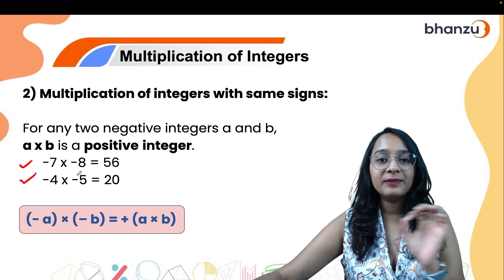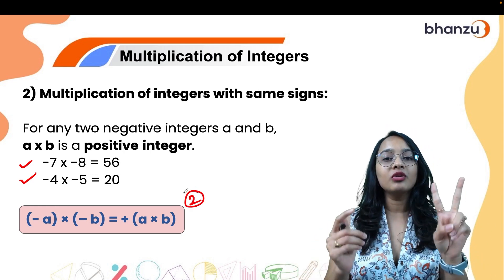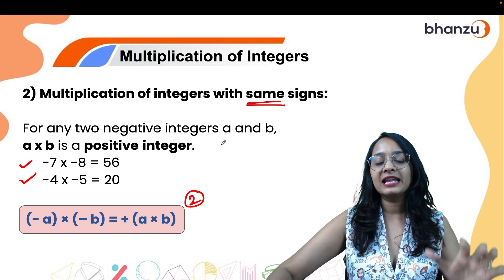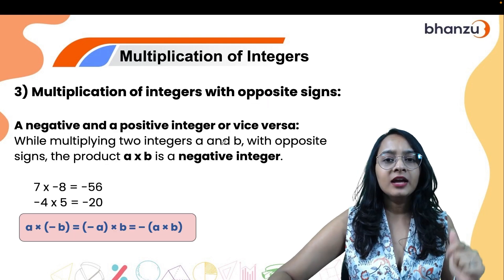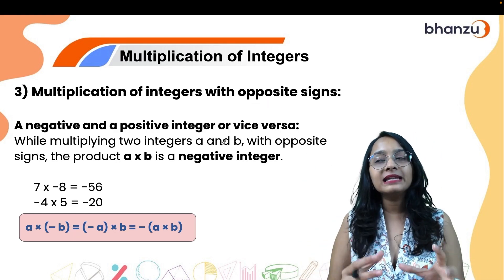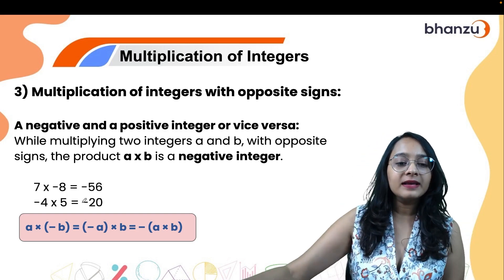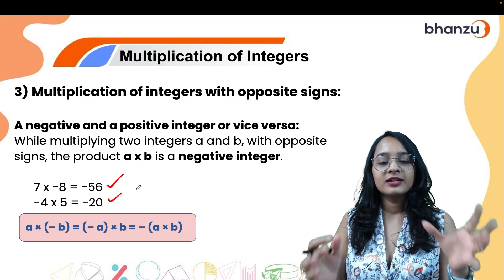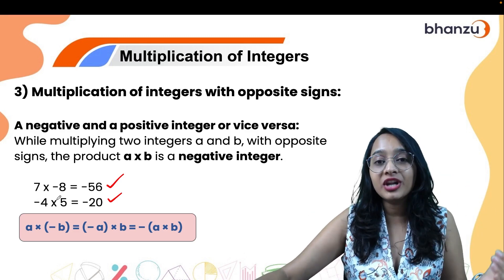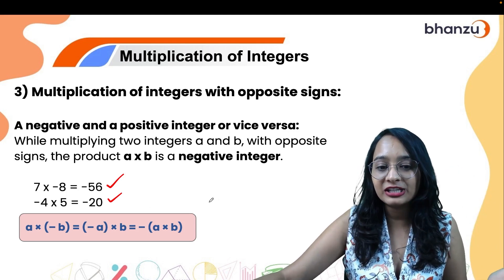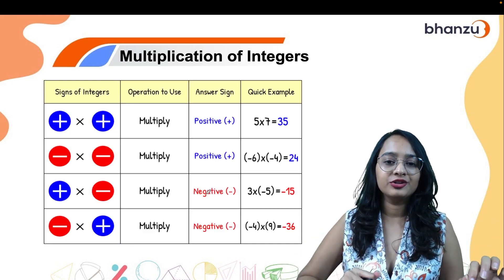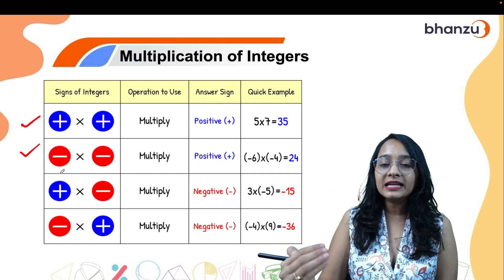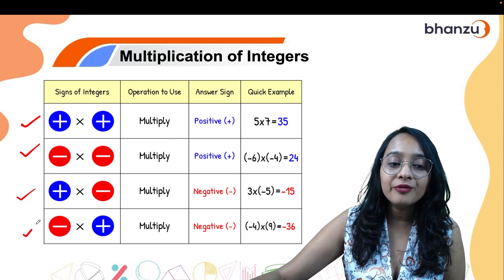Rule two: when you multiply two negative integers the answer is again a positive one — minus 7 multiplied with minus 8 is plus 56. The moral of the story: whenever you multiply integers of the same sign, the answer is always a positive integer. The problem arises when one is positive and one is negative. Here, 7 multiplied with minus 8 — one positive, one negative — gives a negative integer. If any one of the numbers is negative, the entire answer is negative.